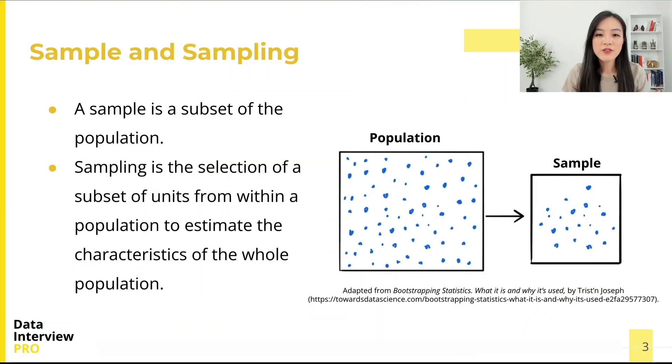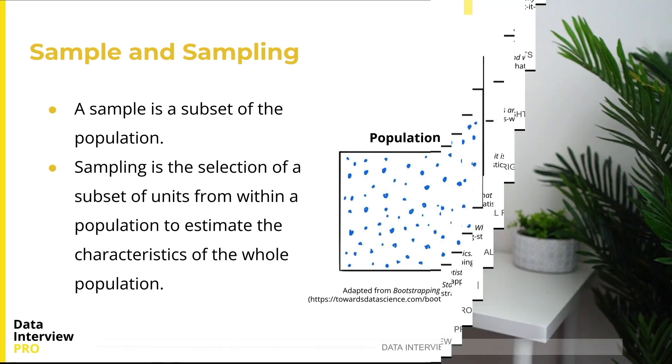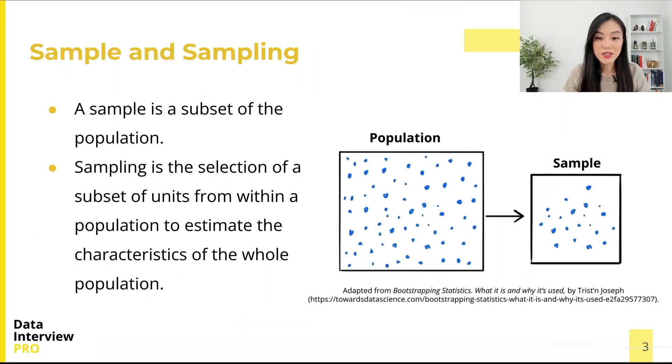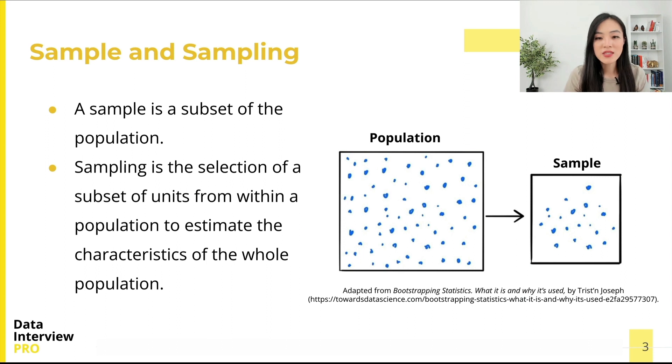Let's first recap what a sample and sampling are. We talked about both concepts in a previous video on sampling — if you haven't watched it, I highly recommend doing so first. A sample is a subset of the population. Sampling is the selection of a subset of units from within a population to estimate the characteristics of the whole population.